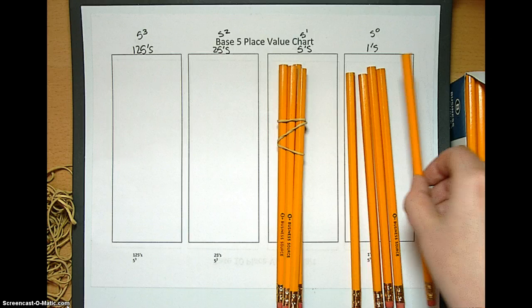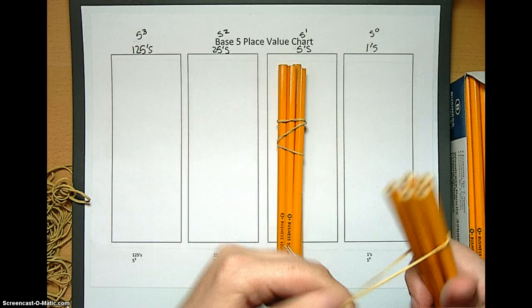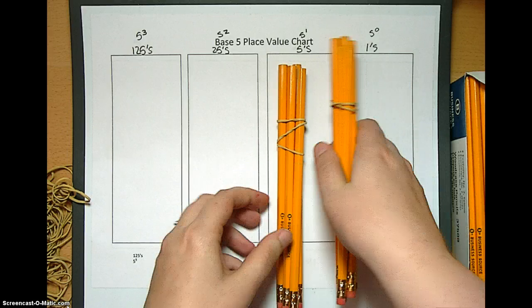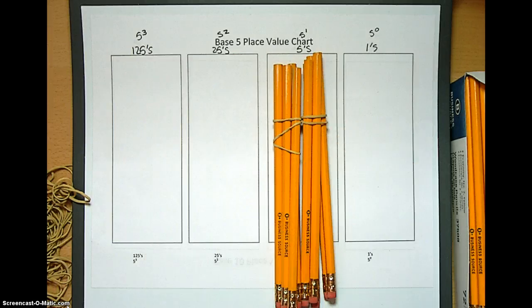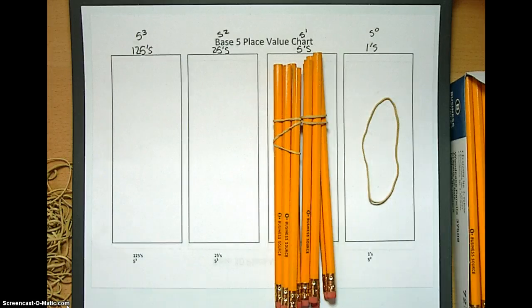And then what do we do next? We bundle, right? Because you can't have 5 of any one thing. This bundling technique is a great way to teach beginning. And so now we have 2 bundles and nothing, 2 bundles of 5 and nothing in the ones place or 2, 0 base 5.